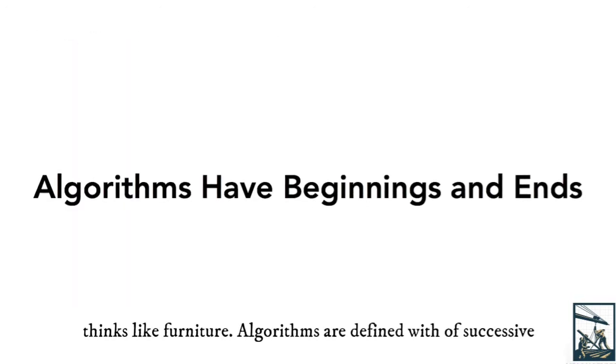Algorithms have beginnings and ends. At the beginning, we have inputs that we assign to a process. At the end, this process produces output values and is complete.